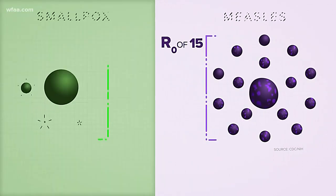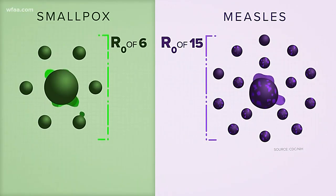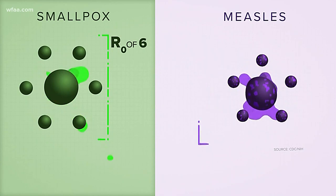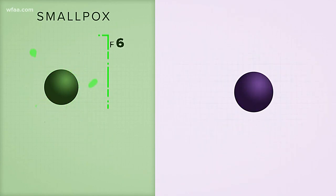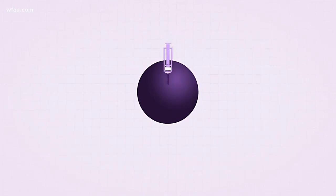So the R-naught of measles is 15. The R-naught of smallpox is six. Both are very contagious, but measles remains rare, and no one gets smallpox anymore.